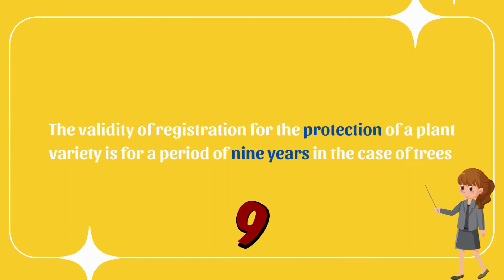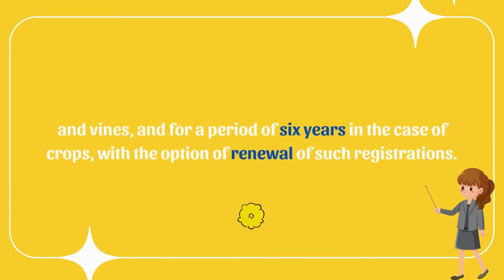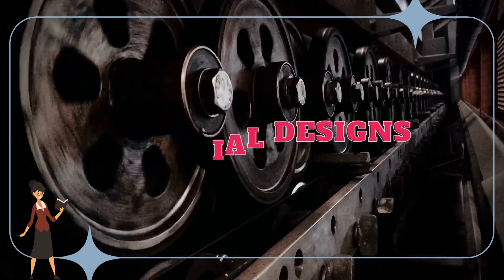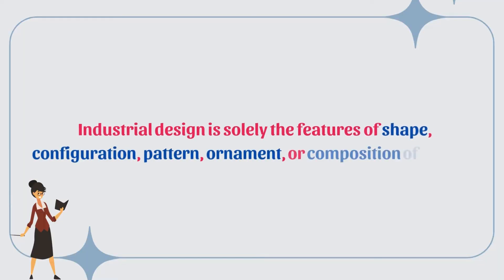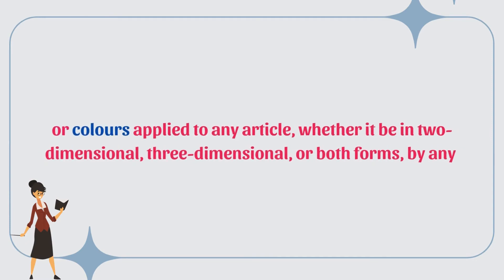The validity of registration for the protection of a plant variety is for a period of nine years in the case of trees and vines, and for a period of six years in the case of crops, with the option of renewal of such registrations.